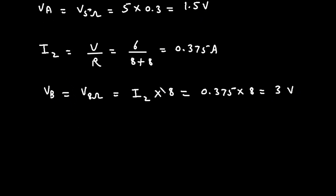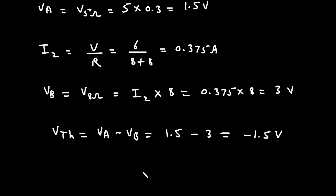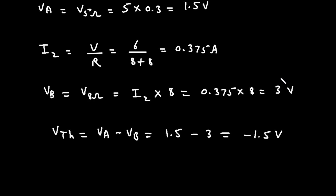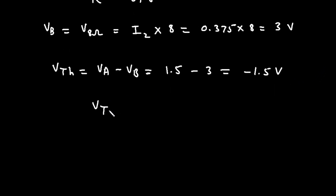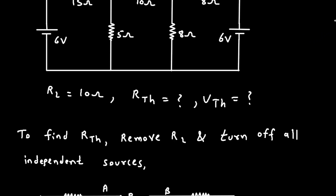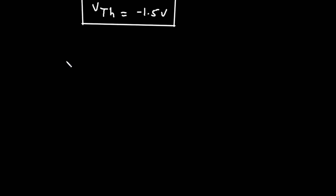Now we got the value of VA and VB. Therefore, VTH equals VA minus VB = 1.5 minus 3 = minus 1.5 volts. So, VTH is minus 1.5 volts. We now have all the values: VTH = −1.5V, RTH = 7.75 ohm, and RL = 10 ohm. From this, we can draw the Thevenin equivalent circuit.